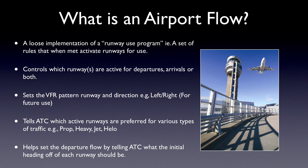And lastly, a flow can tell the ATC system what initial heading after departure aircraft should get. This is used a lot, not just for sequencing and efficiency of traffic flows, but also for noise abatement. Maybe off of runway 36, people immediately get a left turn heading 270 to avoid a noise-sensitive area. So flows help us tell the ATC system those kinds of details.